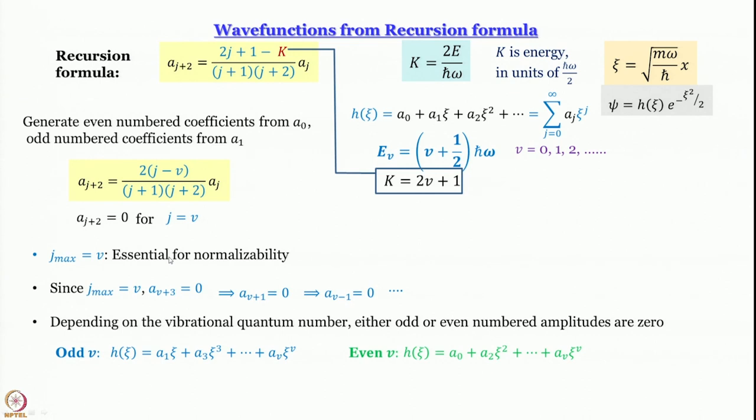Then we said that now, this recursion formula connects alternate amplitudes. Depending on whether j is even or odd, all amplitudes for odd or even terms respectively are going to be 0 because you will not be able to access them.